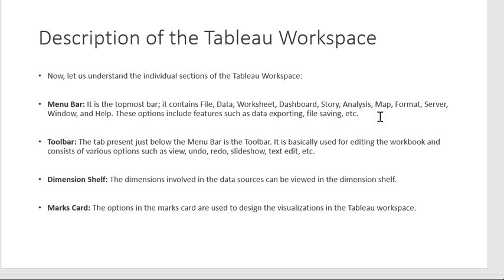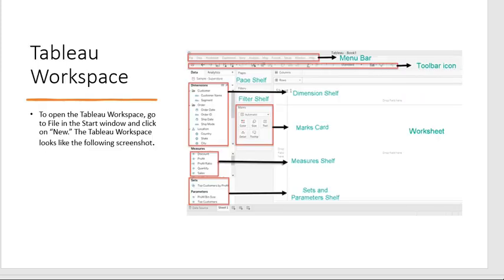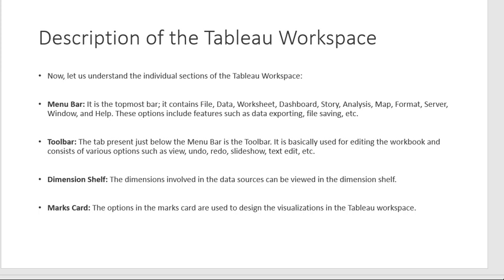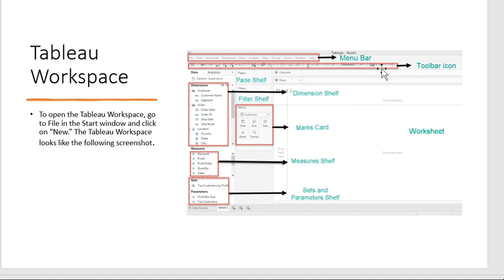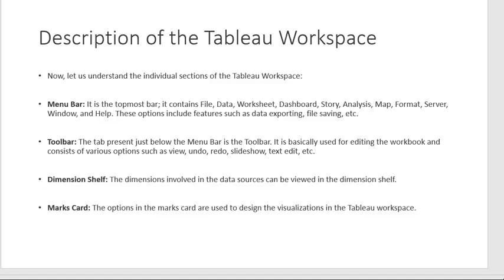The next component is the toolbar, which is located just below the menu bar. It is basically for editing the workbook and consists of various options like View, Undo, Redo, Slideshow, and Text Edit. It allows editing actions like undo, redo, slideshow, and text edit.